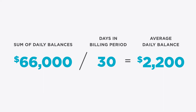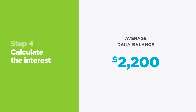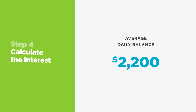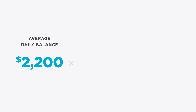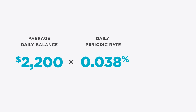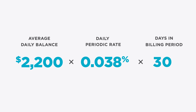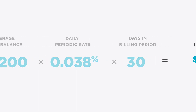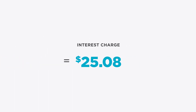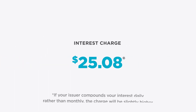Now let's put it all together to calculate the interest. Take the average daily balance and multiply it by the daily periodic rate and the number of days in the billing period. That'll give you the interest charge you can expect on your next bill.